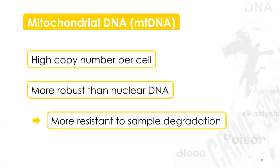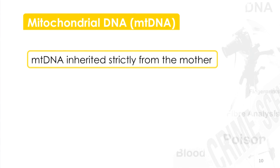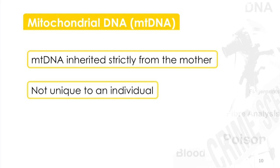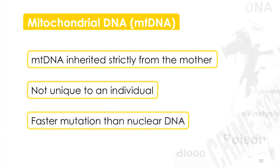There is a very important difference between mitochondrial and nuclear DNA: mitochondrial DNA is inherited strictly from the mother, not the father. This means that mitochondrial DNA is not unique to an individual. A child will have the same mitochondrial DNA as its mother and the same as the grandmother, all the way up the maternal line. There is also faster mutation generation to generation in the mitochondrial DNA, because the proofreading is not so good compared to nuclear DNA.